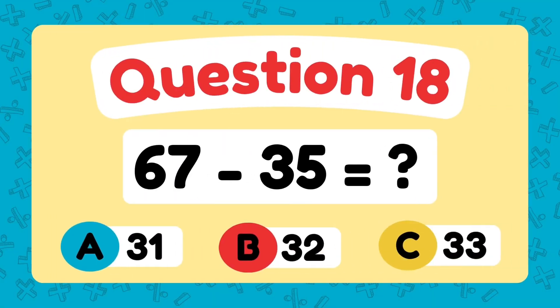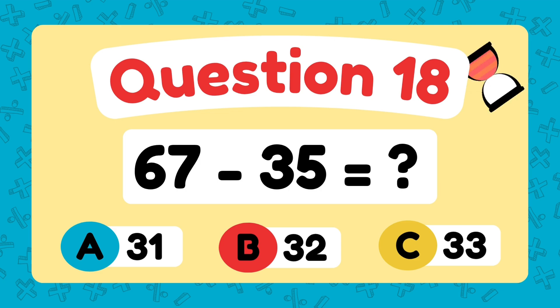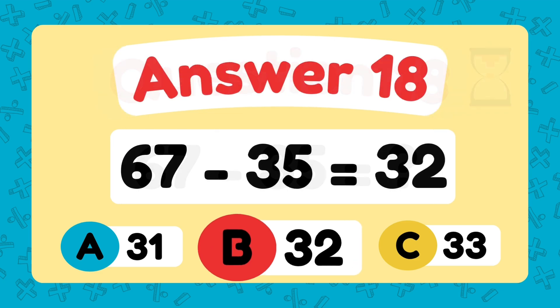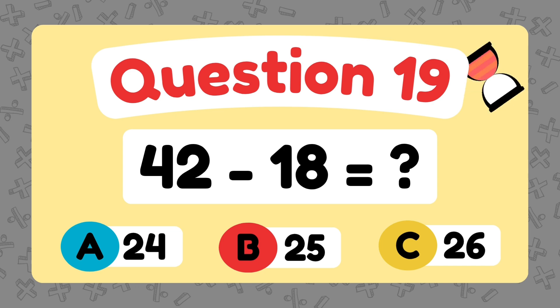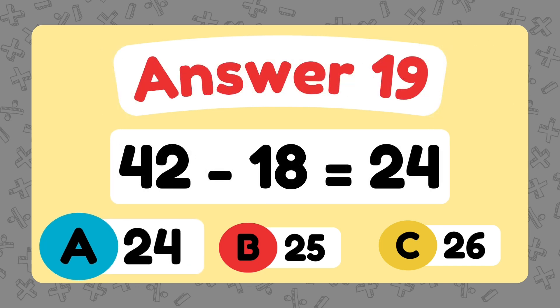What is 67 minus 35? The answer is 32. What is 42 minus 18? The answer is 24.